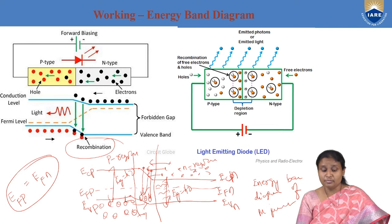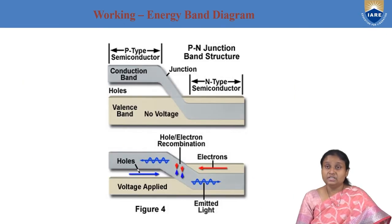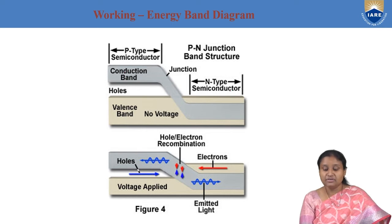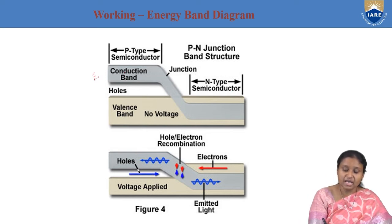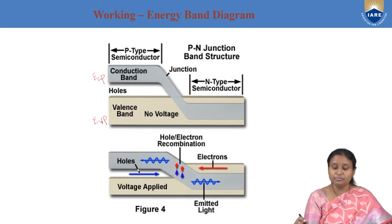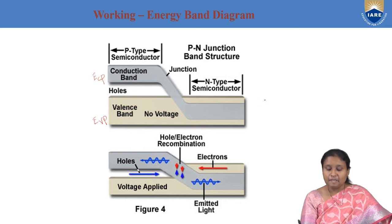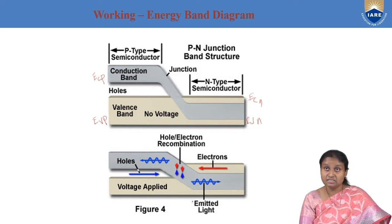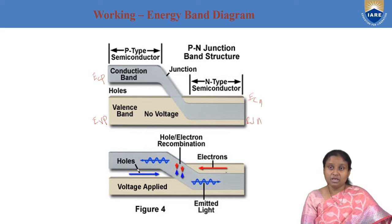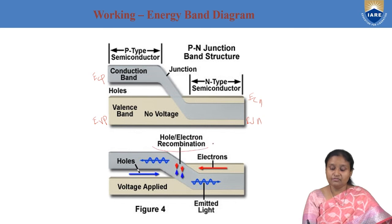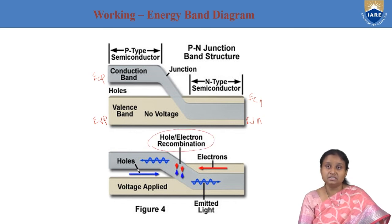This is about the working of the forward biased PN junction diode in terms of its energy band diagram. When we forward bias it, electrons from N region go towards the depletion layer, holes from P region also go towards the depletion layer, and we have recombination of electron-hole pairs, and during recombination energy is released in the form of light.